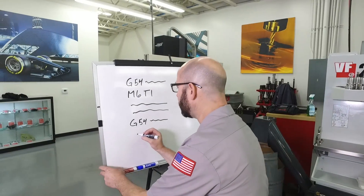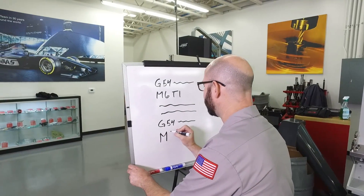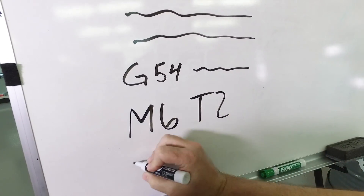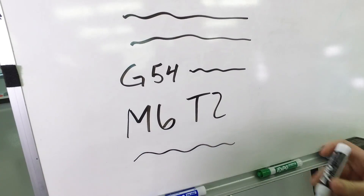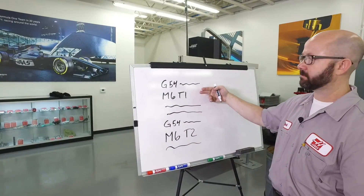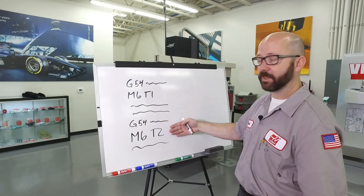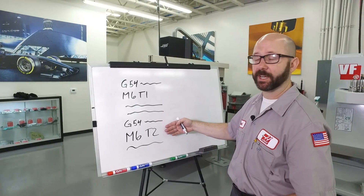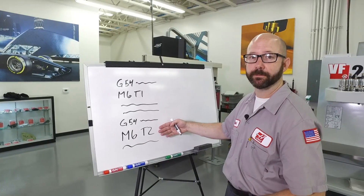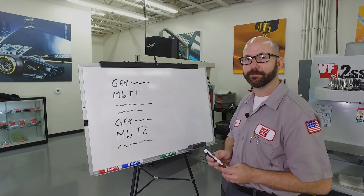Today we're on a machine that has a side mount tool changer, and I've written a simple piece of code here. It's gonna call up my work offset, run some code using tool one, then call up my work offset again, and run some more code using tool two. Let's see how the side mount tool changer reacts to this code.